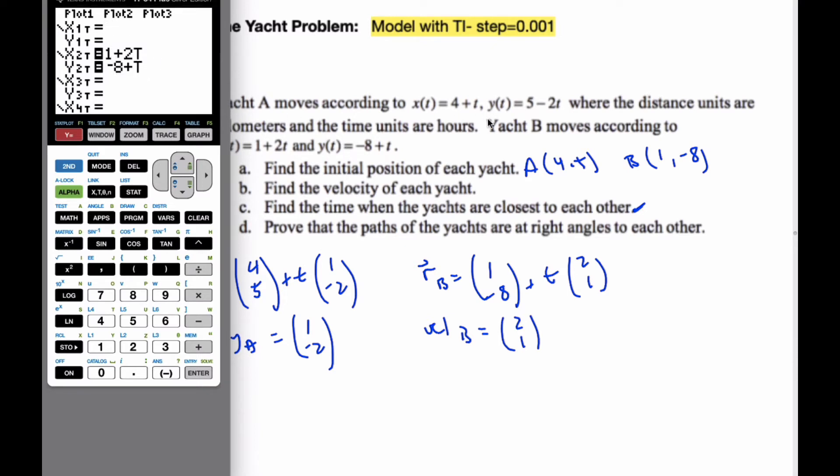For yacht A, I'm going to go 4 plus, now when I hit this button, it's now T. In parametric mode, it's T. In function mode, it's X. I put my X value in, I put my Y value in, it needs both X and Y. And then it's going to have it all set.